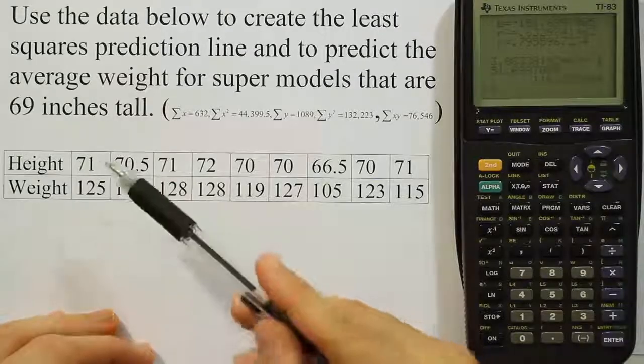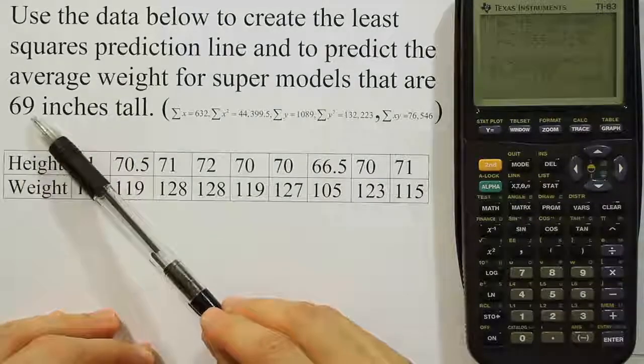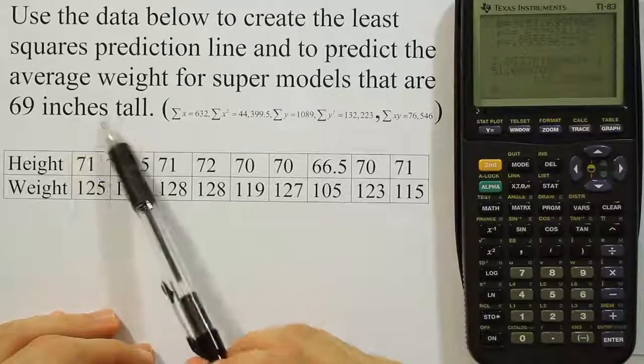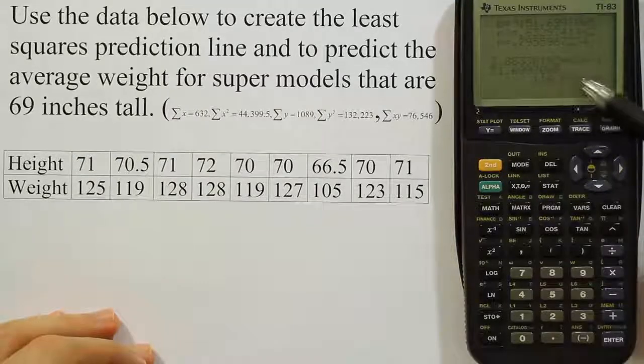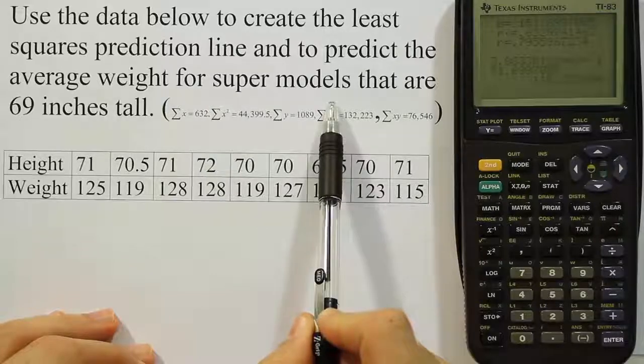And it gives me the answer 116.25. So 116.25 is the result. And what's that saying? It's basically saying for women who are 69 inches tall, their average weight is typically 116 pounds here. At least if they're supermodels, of course.